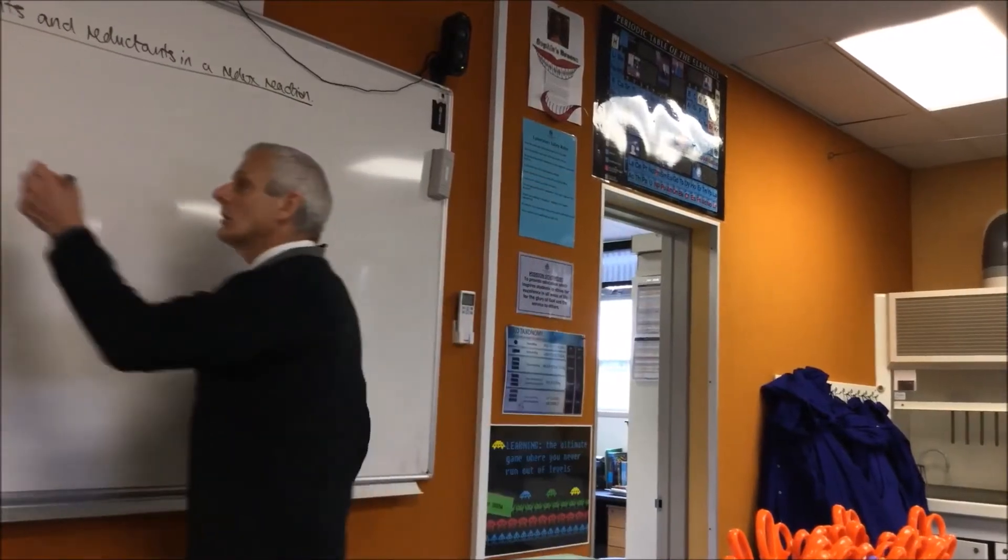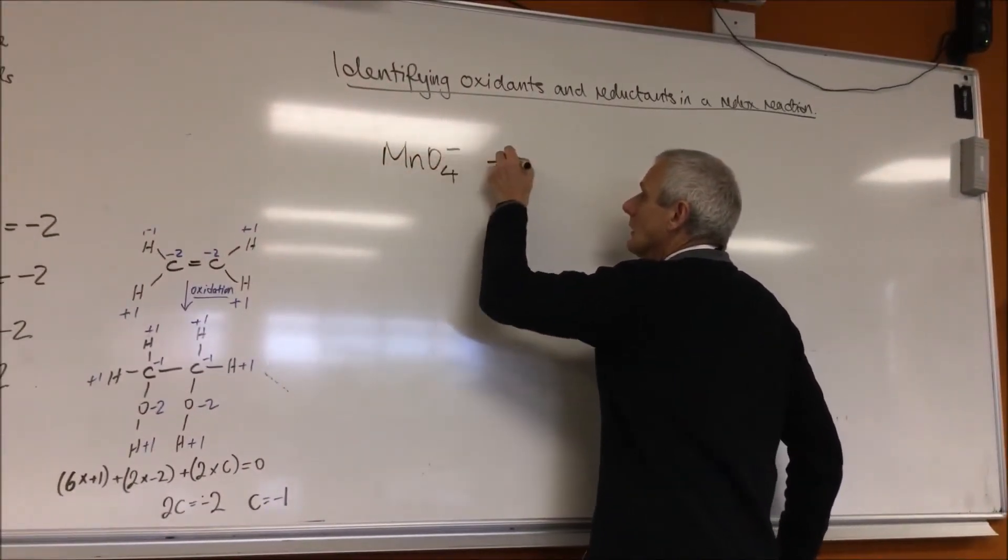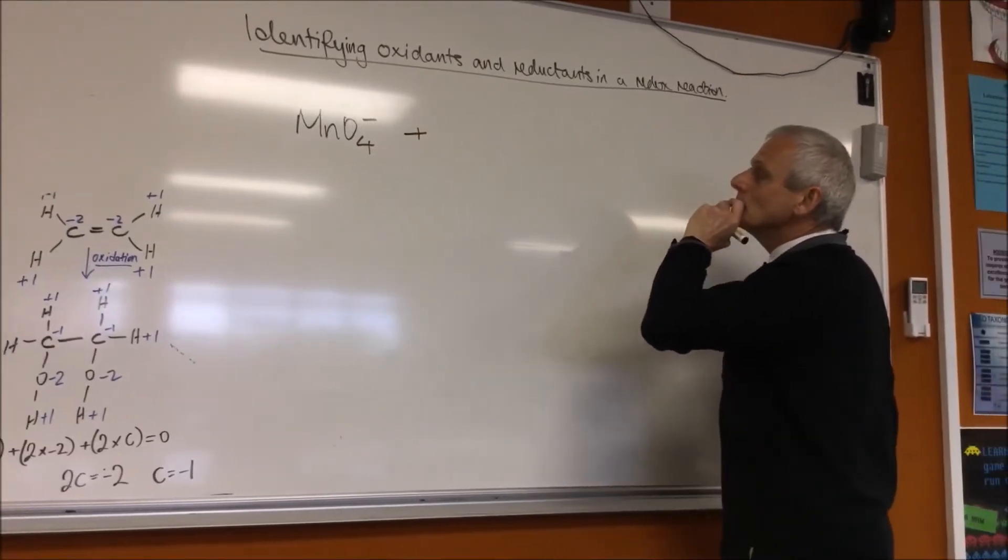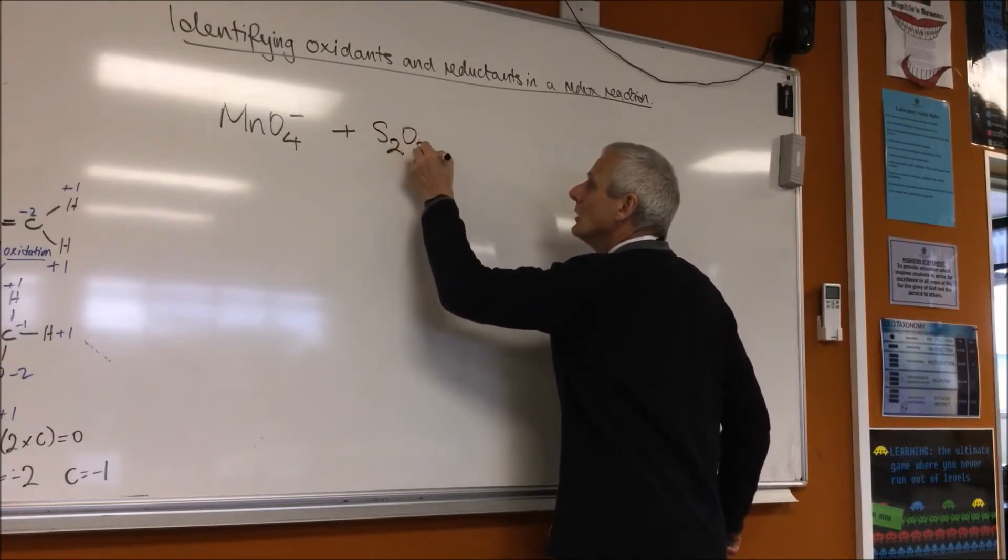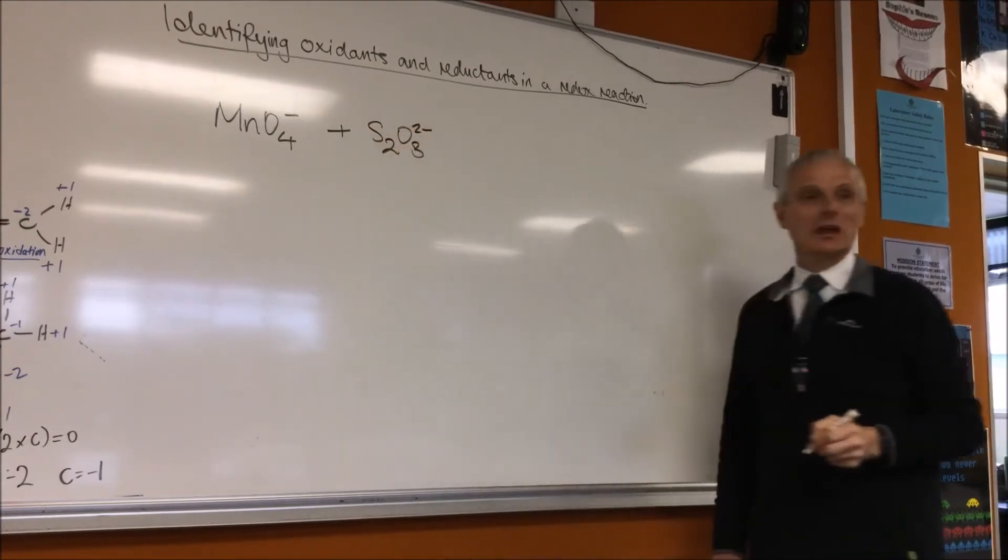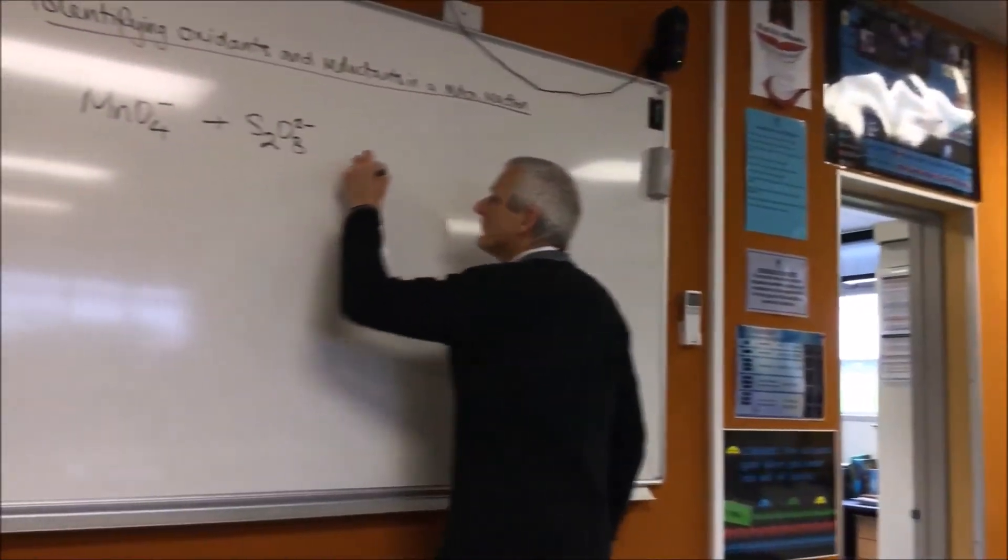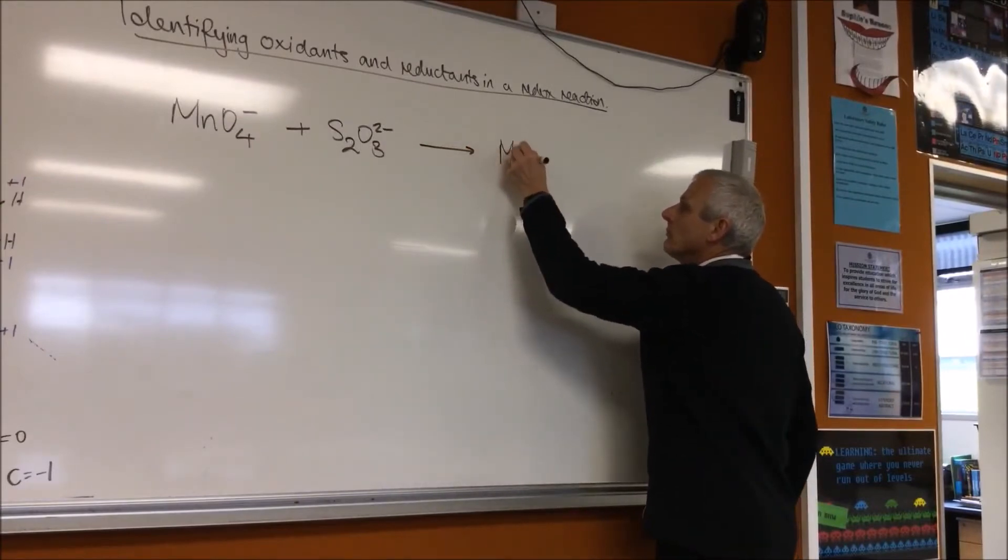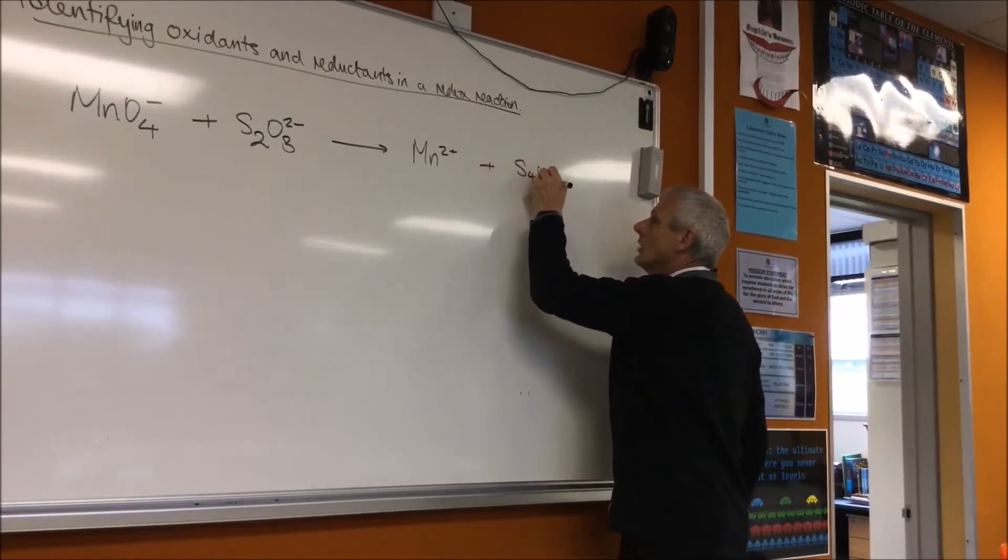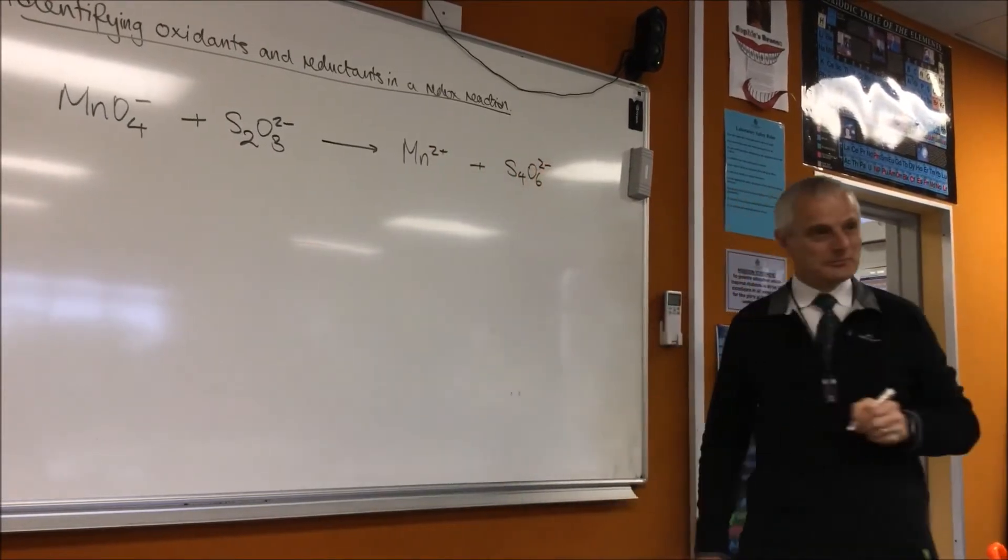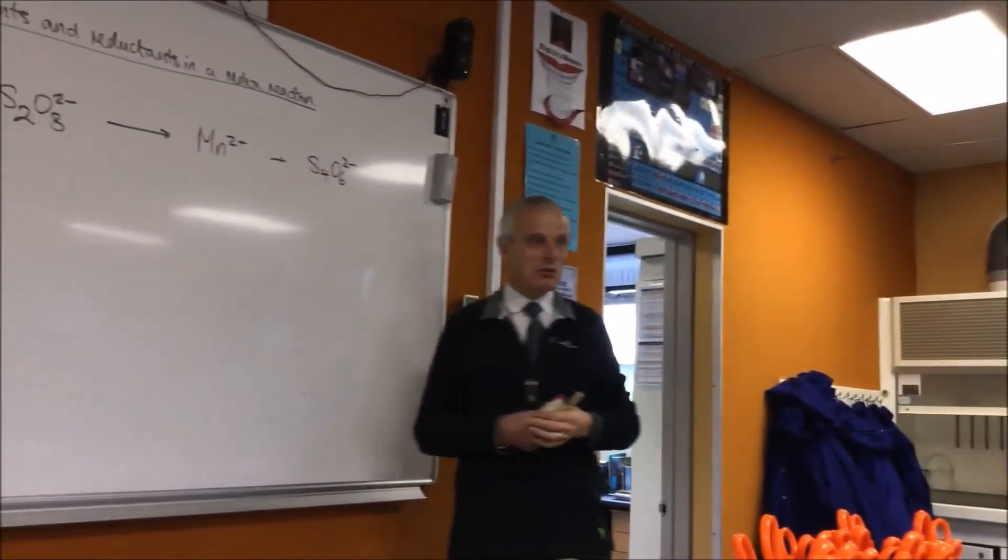We're going to take something like permanganate and what we will react it with is S2O3²⁻, that's thiosulfate and we're going to form Mn²⁺ plus S4O6²⁻. So that's our reaction. And you're all thinking OMG. Well, don't.